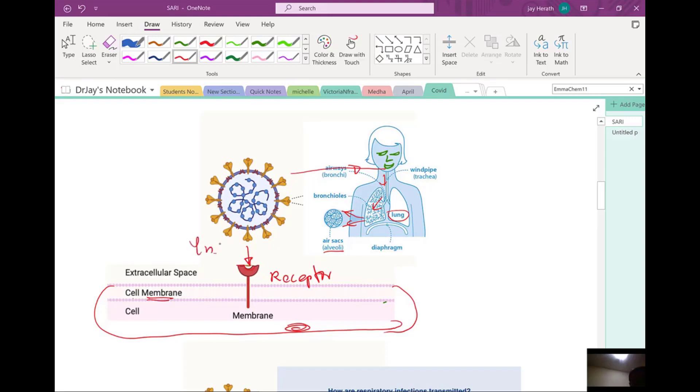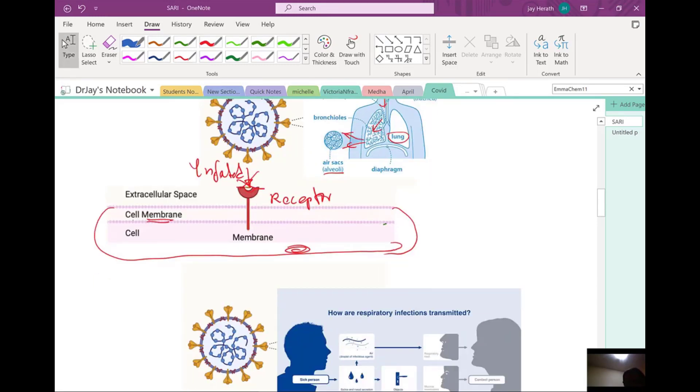This is the infected cell, and let's see how do we stop that. That's the easiest way. Basically, we are trying to stop the enemy at the gate.